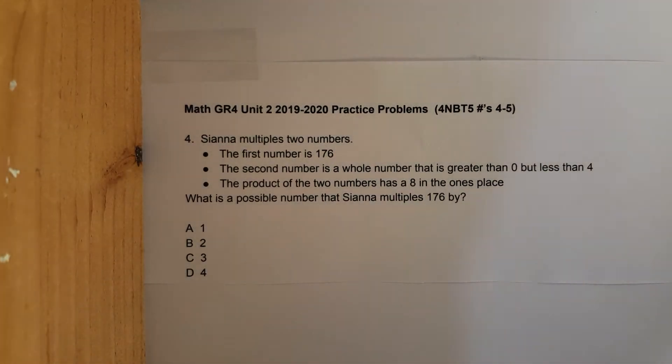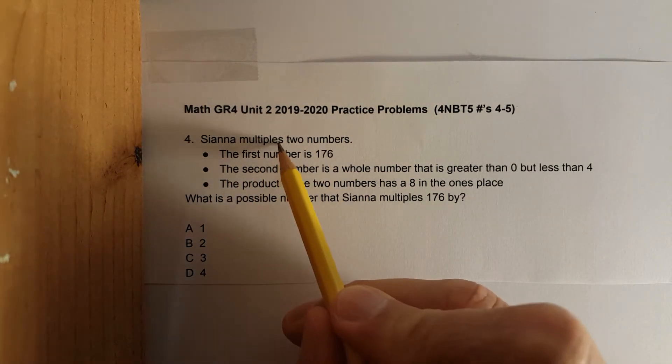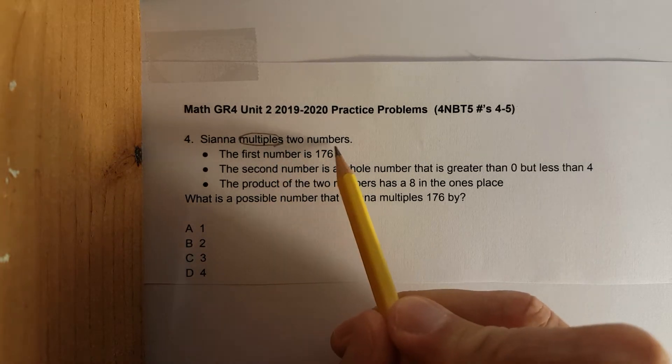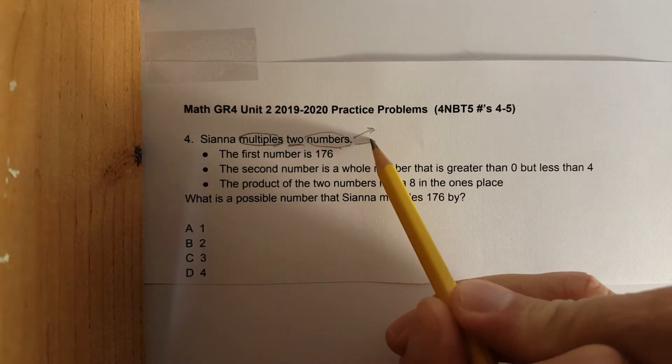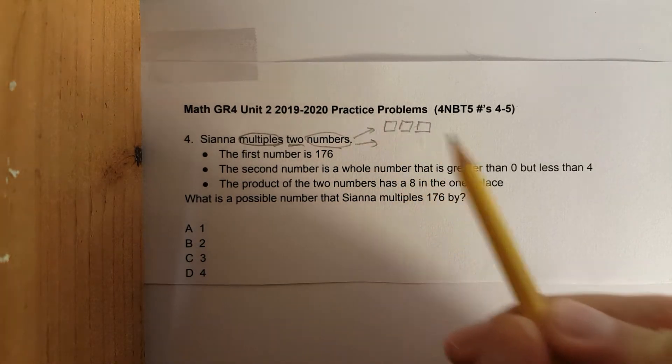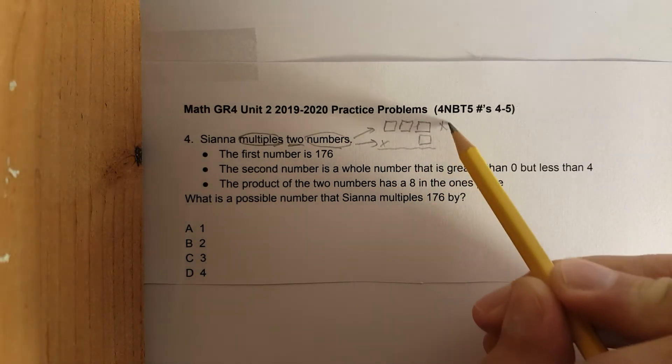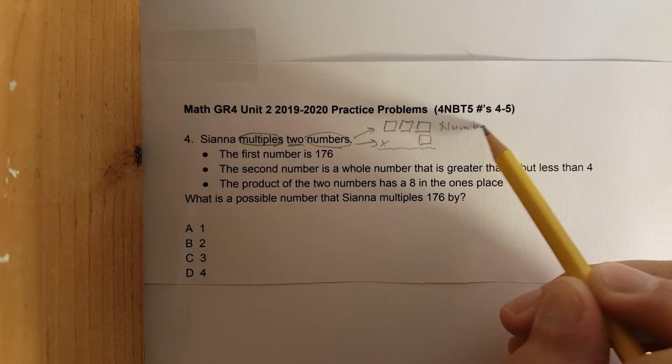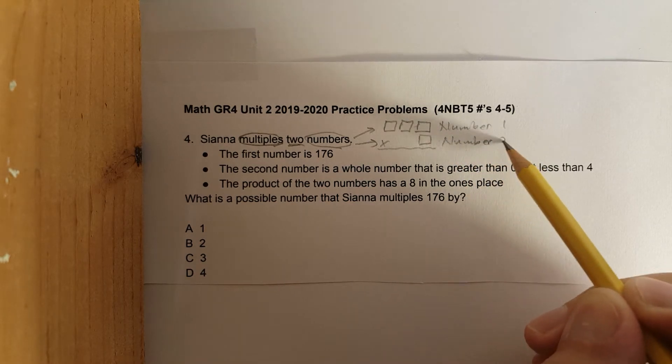All right, here we go. So, Sienna multiplies two numbers. That would be something like this: number one, number two.